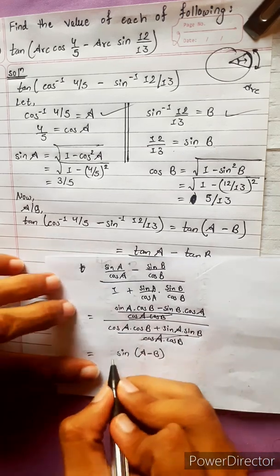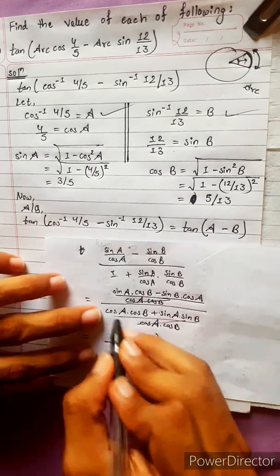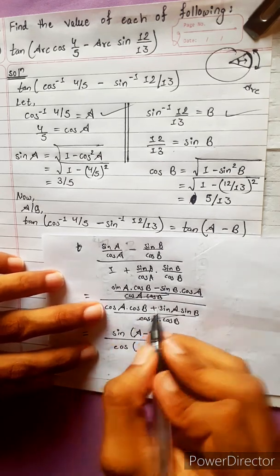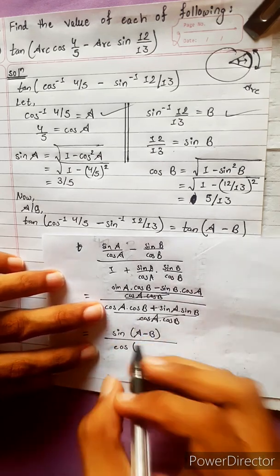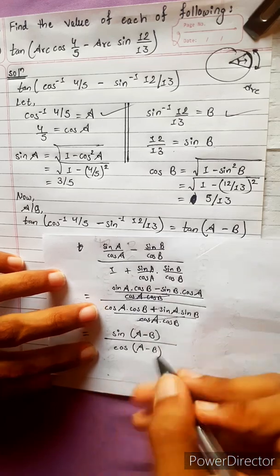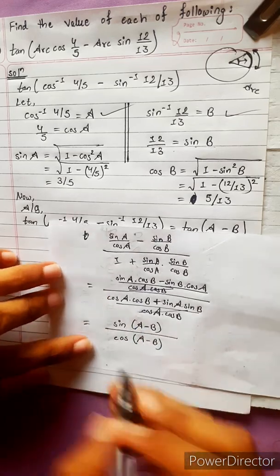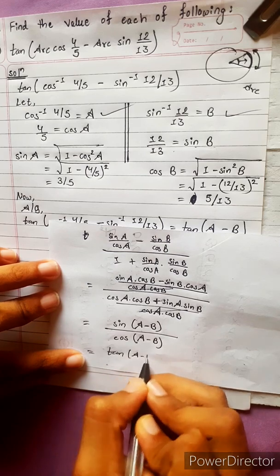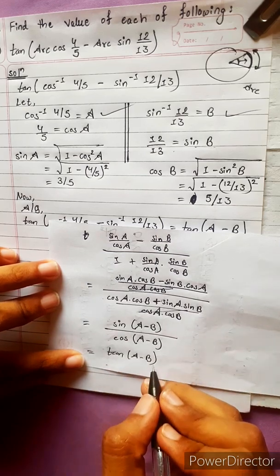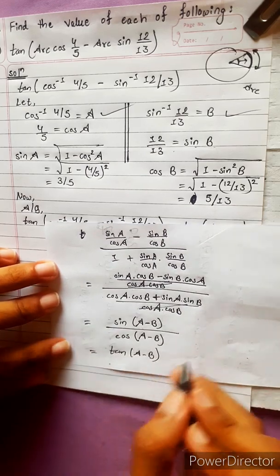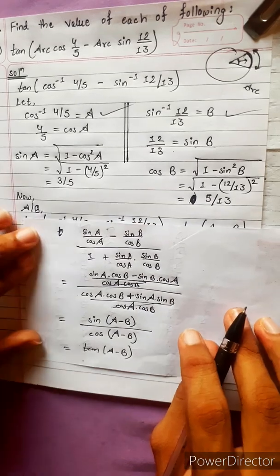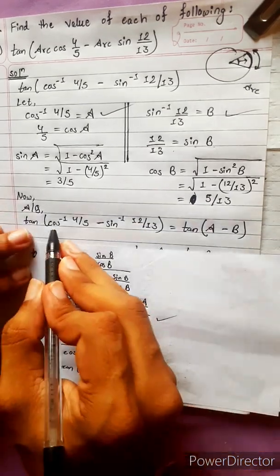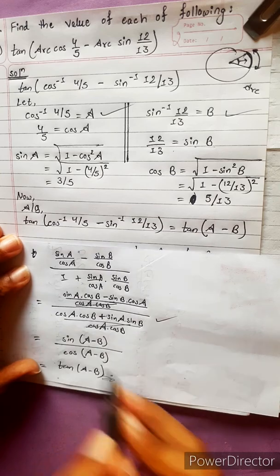What remains is: numerator is sin a cos b minus cos a sin b, which is the formula for sin(a minus b). The denominator is cos a cos b plus sin a sin b, which is the formula for cos(a minus b) — wait, cos(a plus b) would have a minus sign, so this is cos(a minus b). So the whole expression simplifies to tan(a minus b).